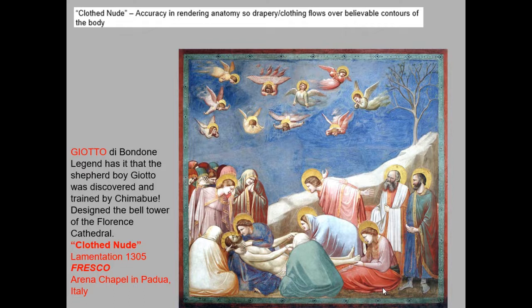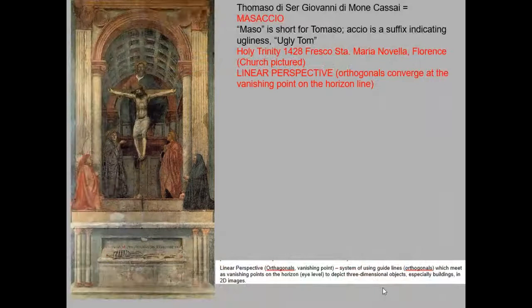Fresco is painted directly onto plaster on a wall. The plaster is applied only in the amount the artist can complete in one working session. The Italian method is to paint in tempera on the fresco plaster while it's still somewhat wet, so the pigment absorbs into the plaster — it's almost painted into the wall rather than on it, making it more permanent.